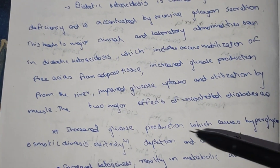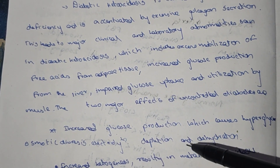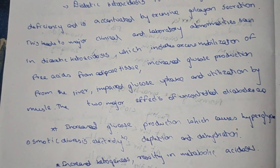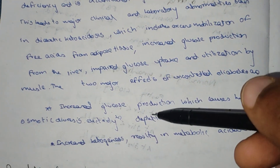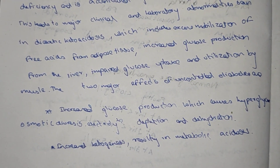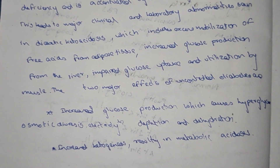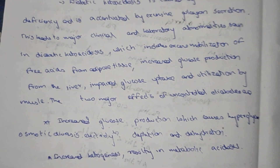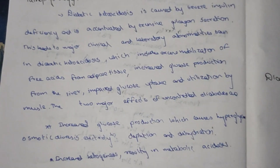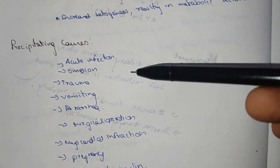In the hyperglycemic state: 1. Osmotic diuresis causes electrolyte depletion and dehydration. 2. Increased ketogenesis resulting in metabolic acidosis — ketone bodies are byproducts. 3. Metabolic acidosis. This is the pathophysiology of diabetic ketoacidosis.